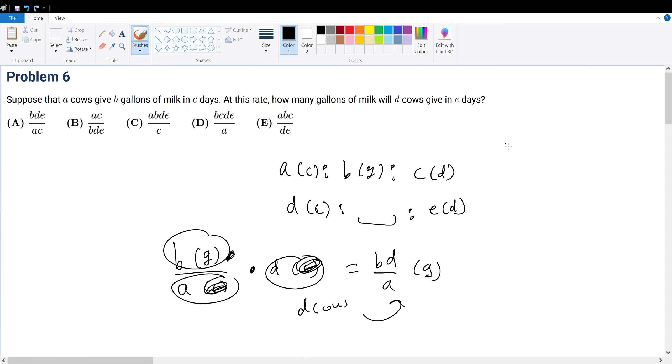C over E to get the days, or is it E over C? Well, we want to find the number of gallons that these new cows would make, so we have to multiply this by E over C.